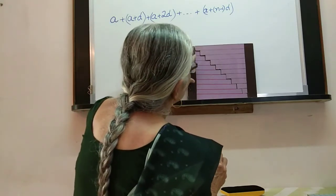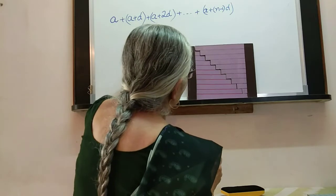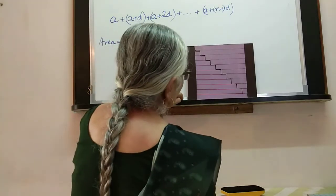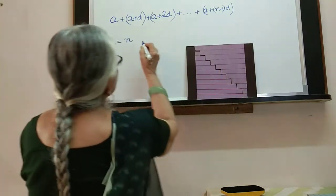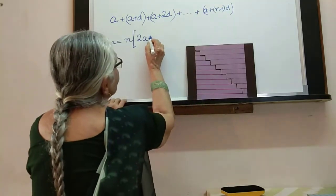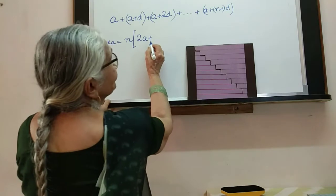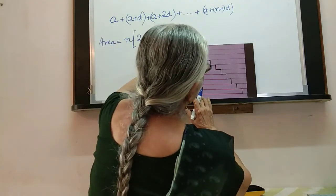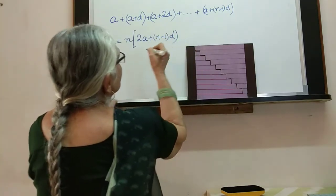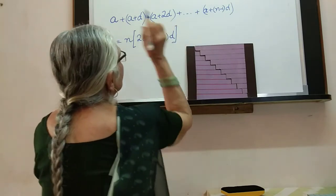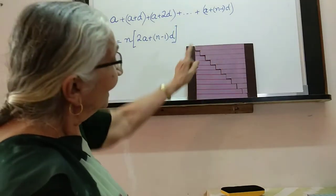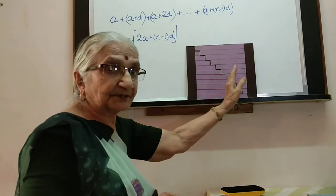The total rectangle area is n multiplied by the full height. The height consists of 2a plus the middle portion. The middle portion spans from 0 d's to (n-1)d's, contributing (n-1)d. So the total area of the rectangle is n times [2a + (n-1)d]. The sum we are looking for is half of this total area, because we used a copy.